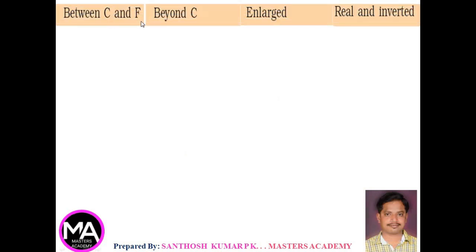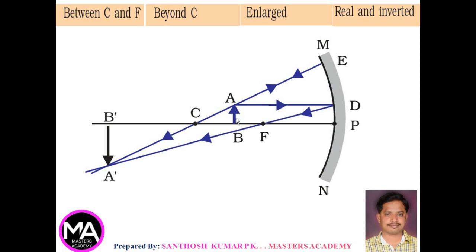Fourth case: when the object is kept between C and F. AB is the object kept between C and F. Consider two rays: one ray parallel to the principal axis, which after reflection passes through the principal focus, and another ray passing through the center of curvature, which after reflection retraces the path. The two reflected rays meet and form an image A'B'. The image is real and inverted, and it is magnified — enlarged compared to the object. The image is formed beyond C.